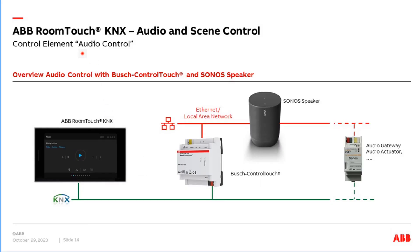The first control today is the so-called Audio Control element. Audio control means we can send commands via KNX — for example to the Bush Control Touch. The Bush Control Touch converts KNX twisted-pair telegrams into special IP telegrams to control a Sonos speaker via patch cable or Wi-Fi access point. The audio control element is not limited to the Bush Control Touch — we have a wide range of parameters to control other devices like audio gateways or audio actuators for Sonos speakers available on the market.